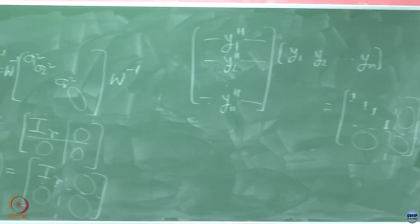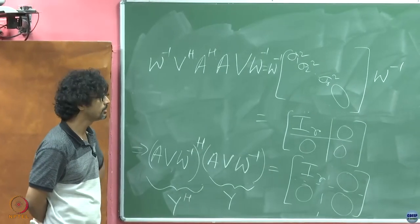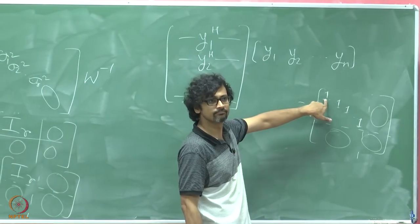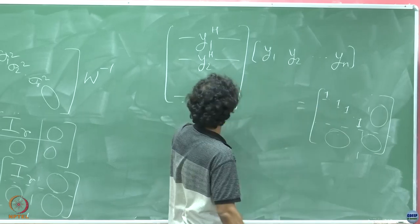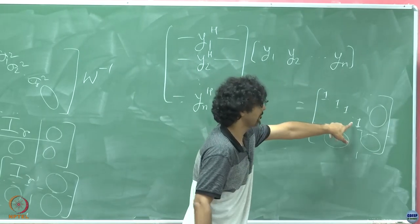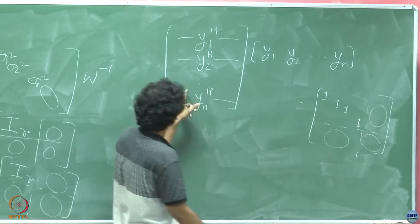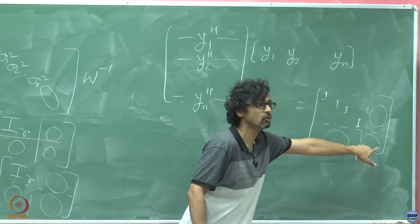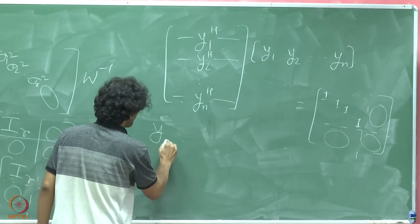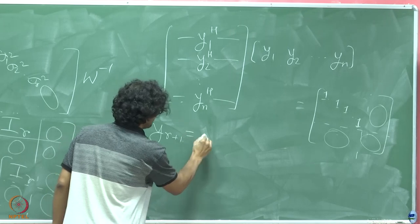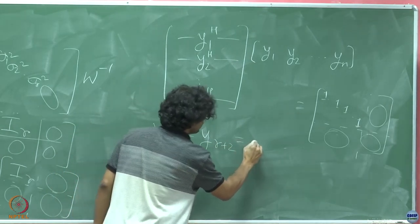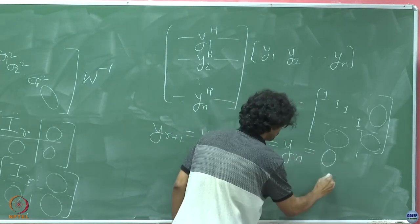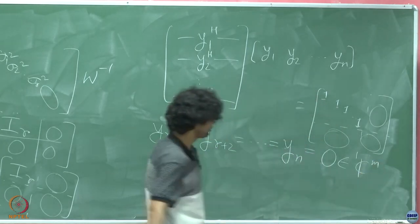What does that tell me about these ys? y1 Hermitian y1 is 1, y2 Hermitian y2 is 1 until yr Hermitian yr is also 1. What about the last n-r fellows here? Their norms are 0.